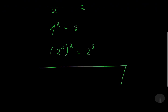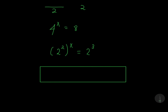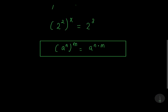There's this law of algebra which says a to the power n·m is just a to the power n multiplied by m. So we'll multiply 2 with x.